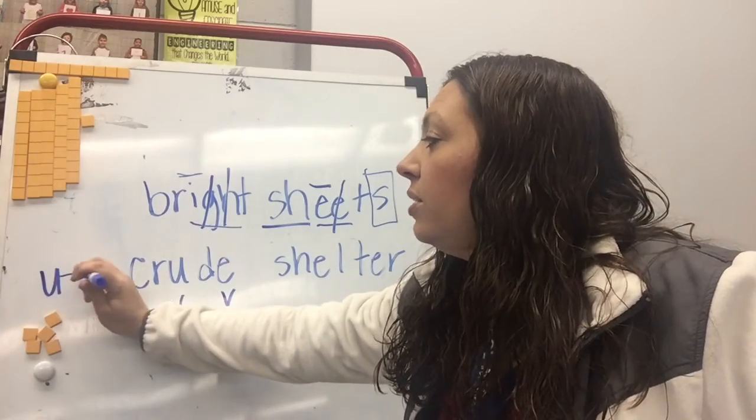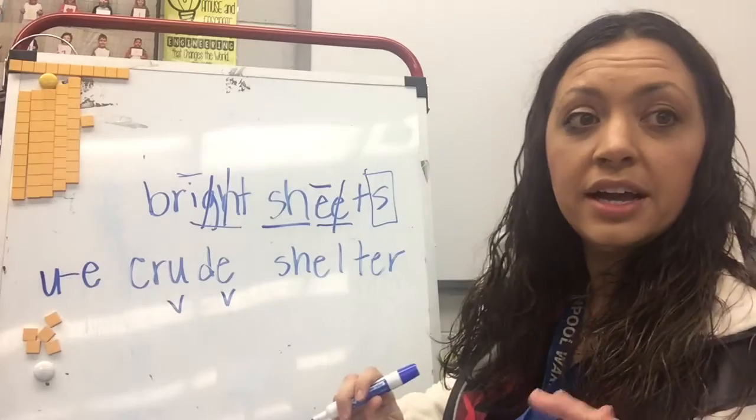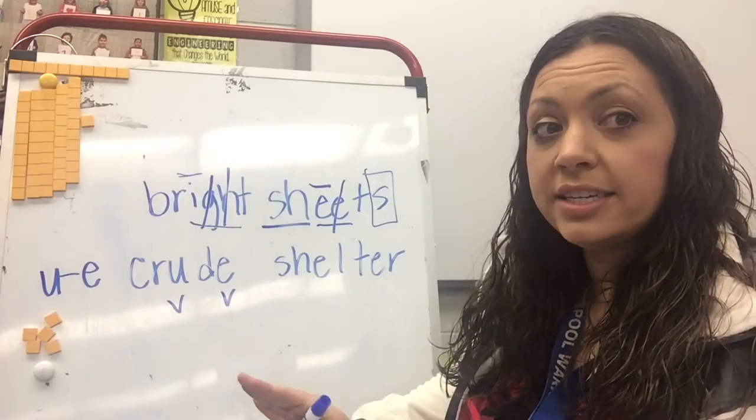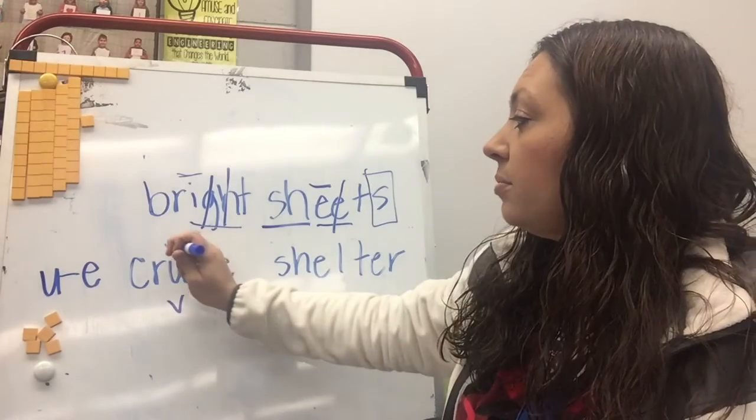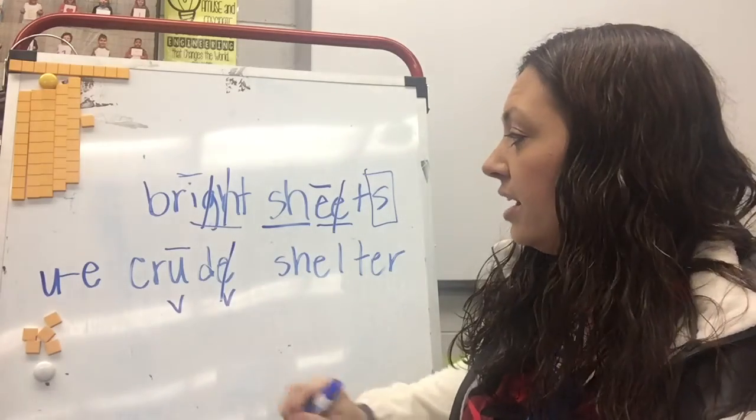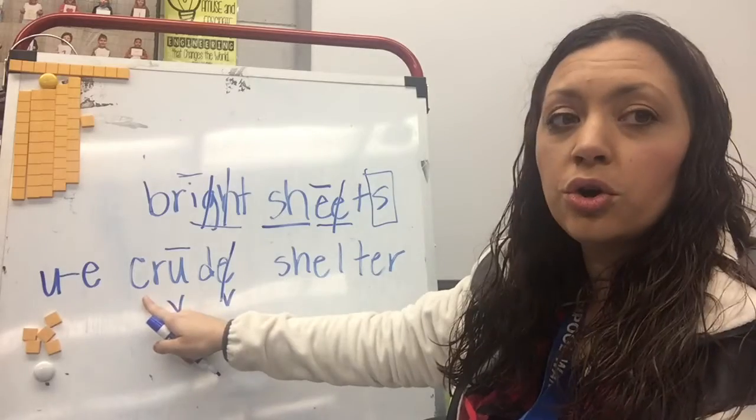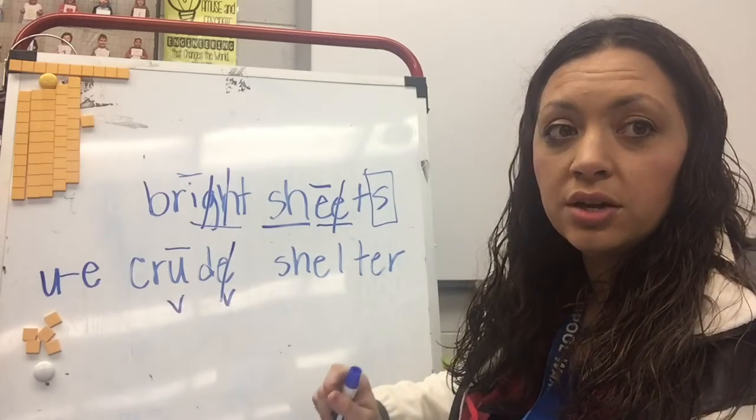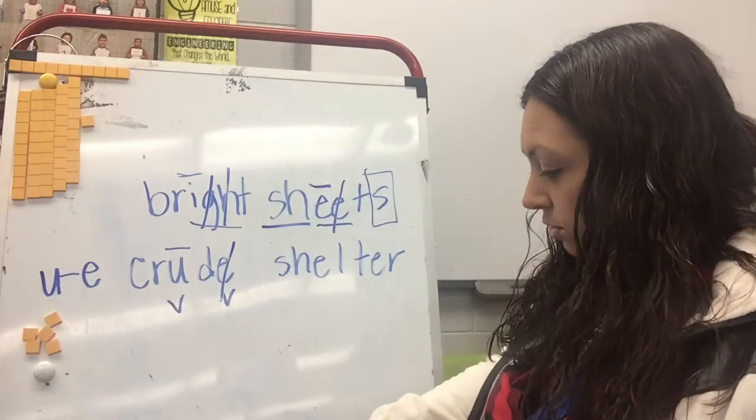And I know when we have a U consonant E word, that U is going to be long, and that sneaky E is going to be silent. So I have to mark it off. So, so far, I have cur-u-de. Crude. Very good. So crude.